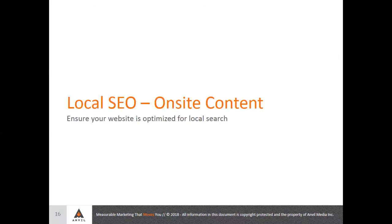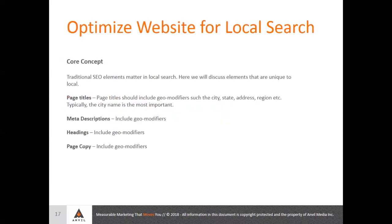Now we'll be talking about what you can do on your website. The core traditional elements of SEO are at play here — talking about page titles, meta descriptions, headings, and page copy. And including local modifiers in all of those is really as simple as it sounds. So on this page here...